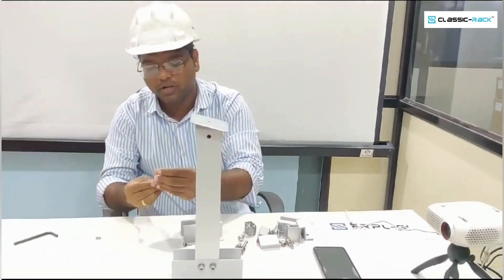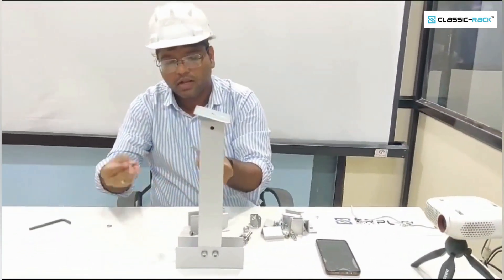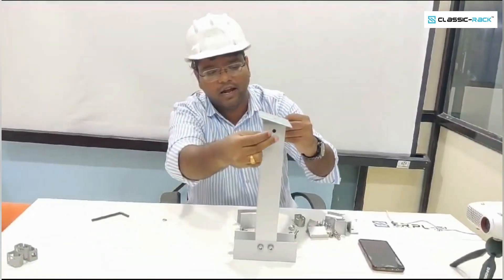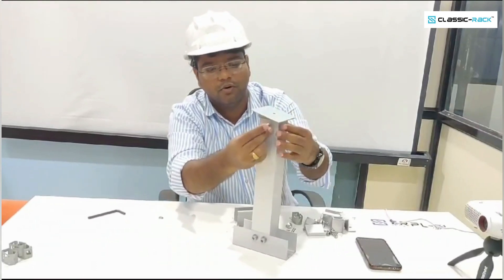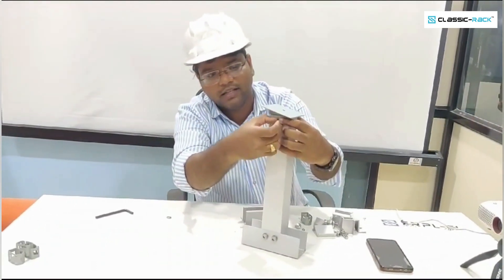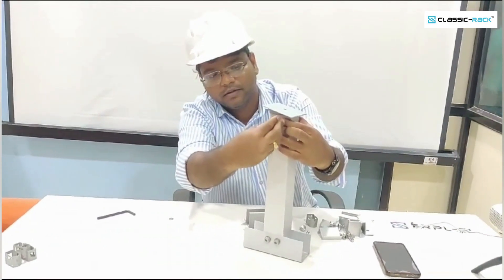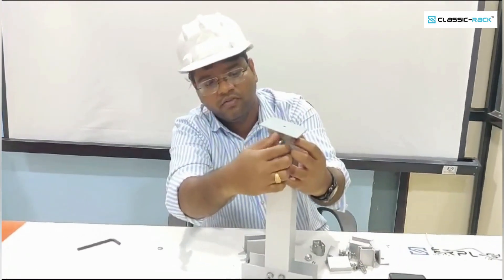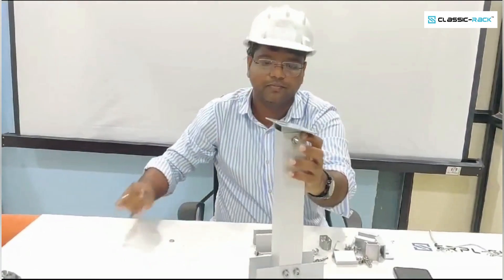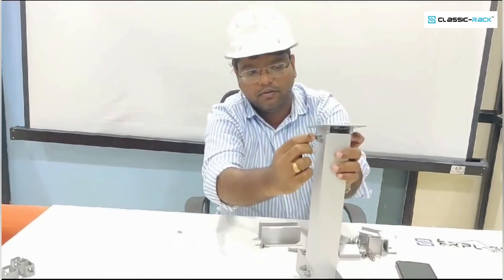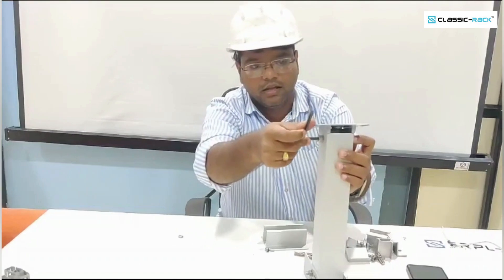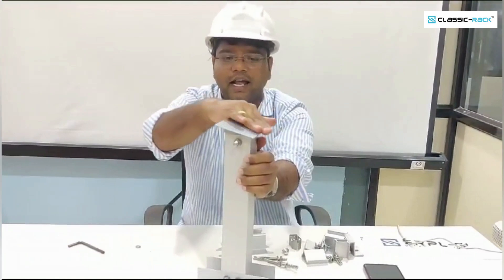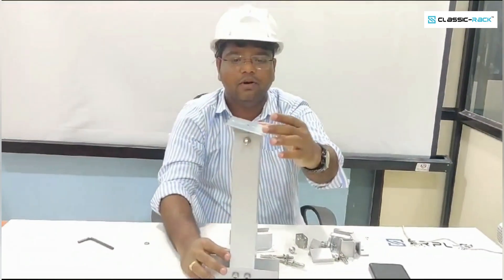This plate which is made up of die-casted product will be installed in this particular box channel. What you need to do is take this 70mm bolt, plain washer at this side and another side, and directly clamp this bolt in this way so that this plate will be fixed.